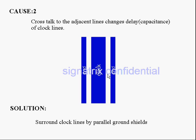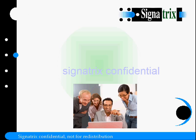So how can we avoid this kind of clock jitter? We have to surround the clock lines by parallel ground shields. This is the solution for the second cause of clock jitter.